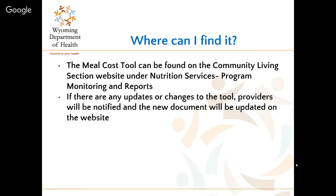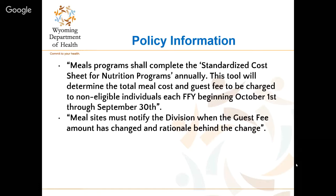You can always find the most recent copy of the tool there and you will be notified if changes are made. For a brief policy review: meal programs need to complete this tool annually. It helps determine the total meal cost and the guest fee charged to non-eligible individuals for Title 3 programs, and it helps determine the guest fee for the fiscal year — October 1st through September 30th. Meal sites need to notify the division when the guest fee amount has changed and provide rationale. We look at guest fee amounts during quality assurance.